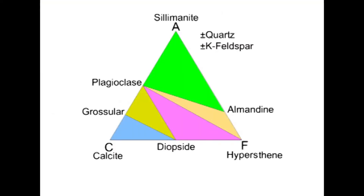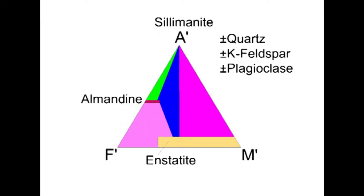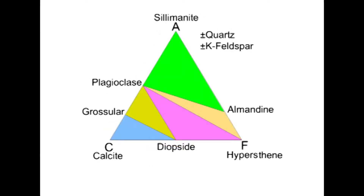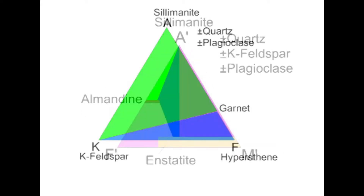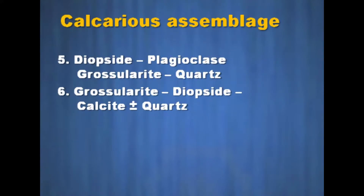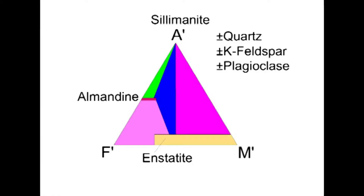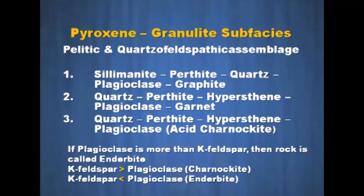Let us see the ACF, AKF, AFM diagrams on the screen and we can predict the different assemblages like pelitic, quartzofeldspathic, basic, calcareous, etc. Taking up the pelitic and quartzofeldspathic assemblages: the first assemblage is sillimanite, perthite, quartz, plagioclase, graphite.